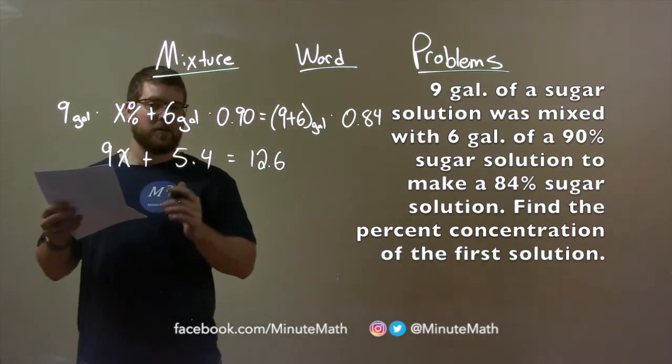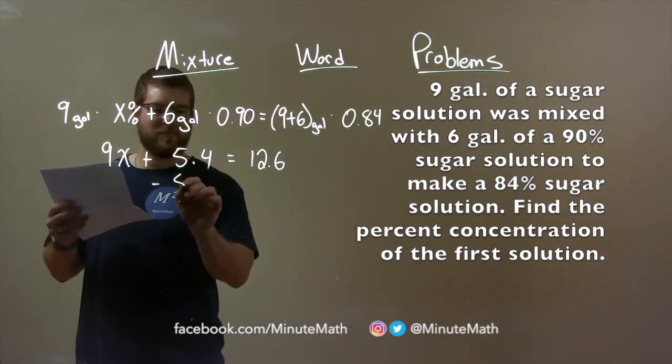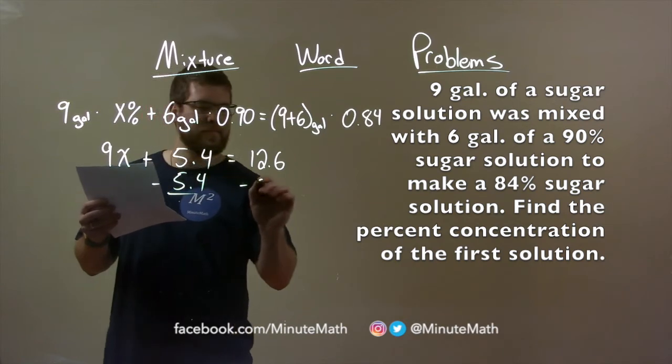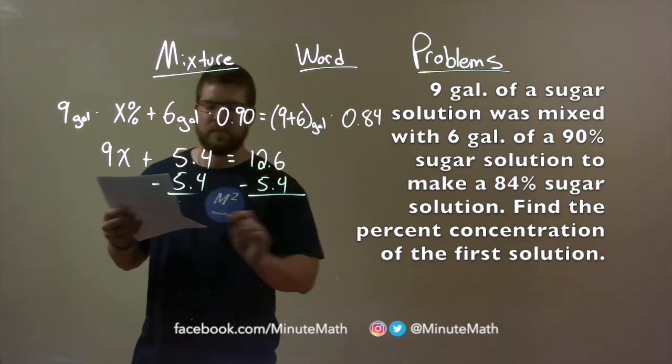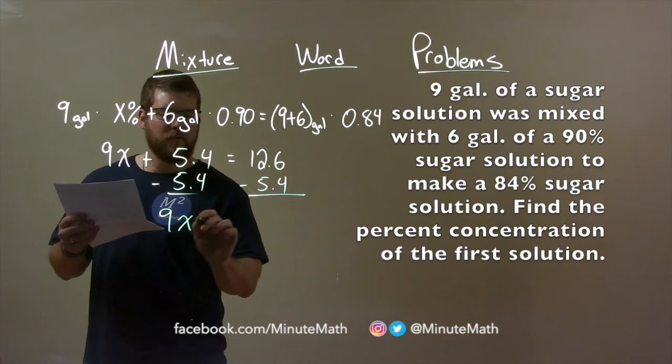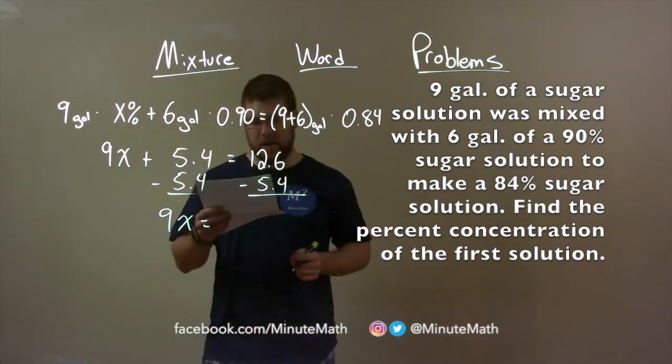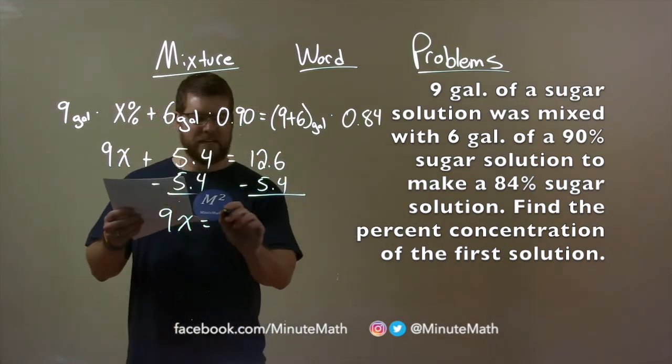Our journey to solve for x: we subtract 5.4 from both sides, and we have 9x by itself. 12.6 minus 5.4 is 7.2.